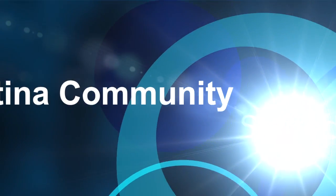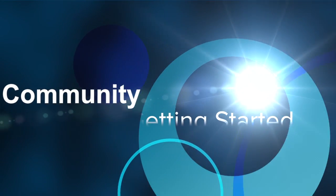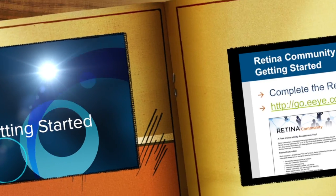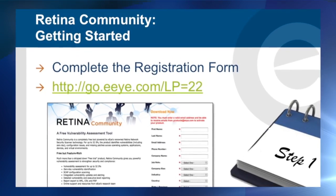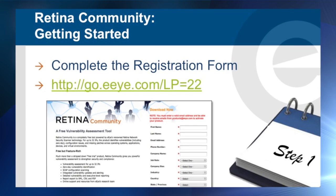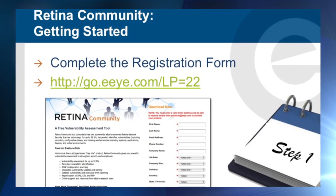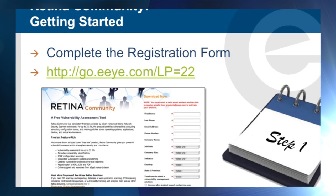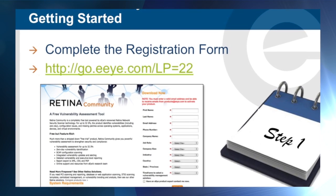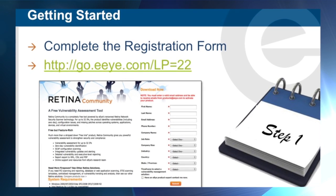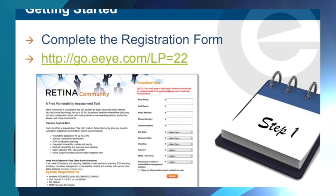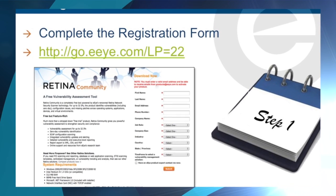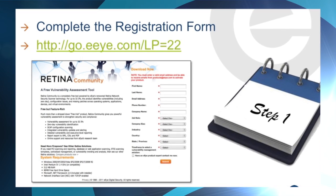Welcome to Getting Started with Retina Community Edition. In order to download and authorize your copy of the Retina Community Edition, please go to the website go.eeye.com/LP=22 and complete the online registration form.